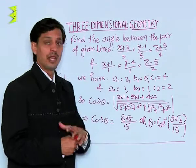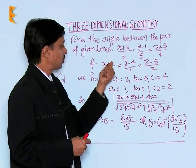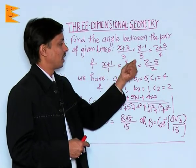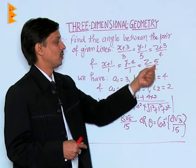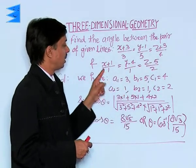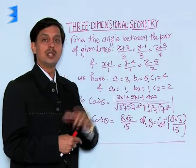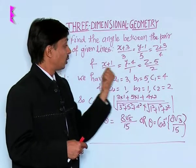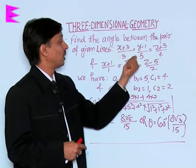Second line, if I compare it as (x-x1)/a2, (y-y1)/b2, (z-z1)/c2, the values are a2 is 1, b2 is 1, and c2 is 2. These are a2, b2, c2, and those are a1, b1, c1.